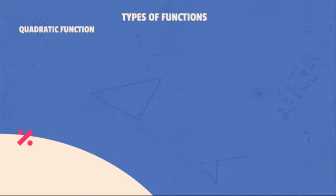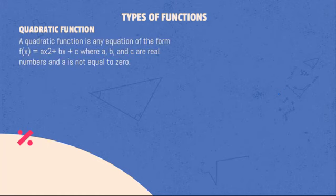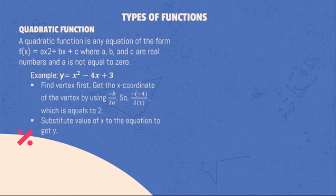Quadratic function: A quadratic function is any equation of the form f(x) = ax² + bx + c, where a, b and c are real numbers, and a is not equal to zero. For example, y = x² - 4x + 3.